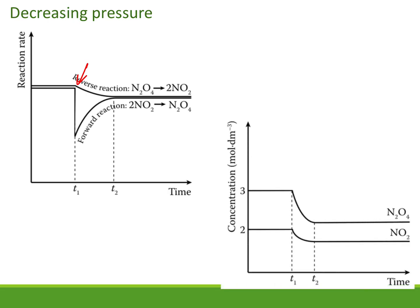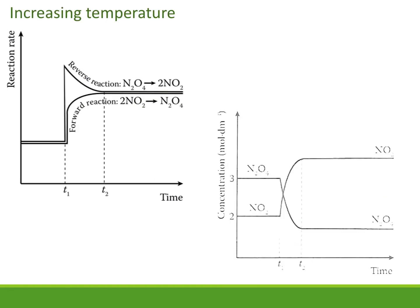If we decrease the pressure, the reverse reaction is favored. On the graph, both concentrations decrease, but the NO2 decreases less — actually we're making NO2, so we're using up the N2O4. By using up the N2O4 we are favoring the production of NO2.